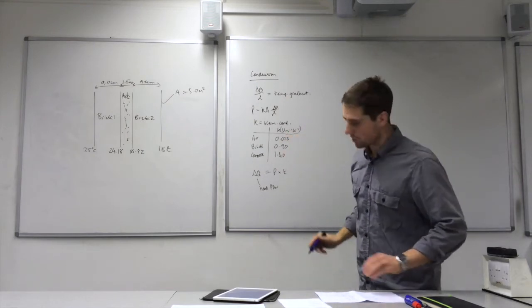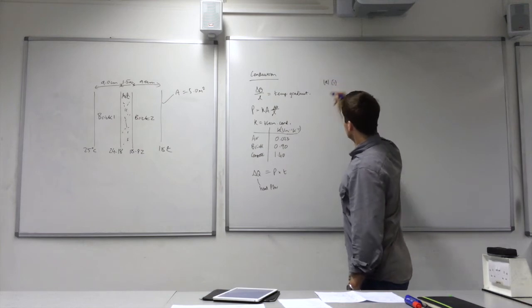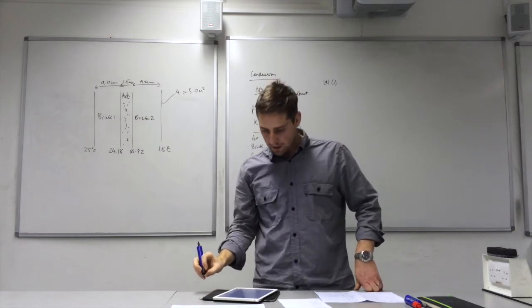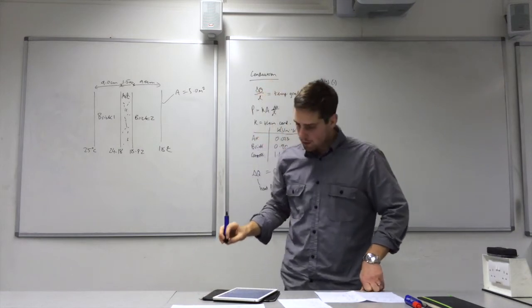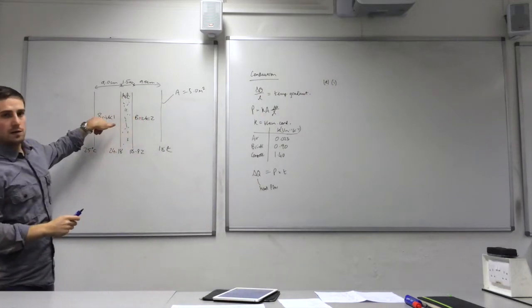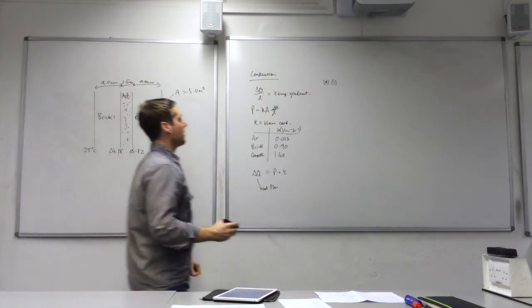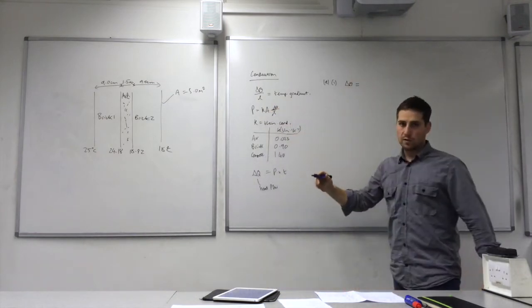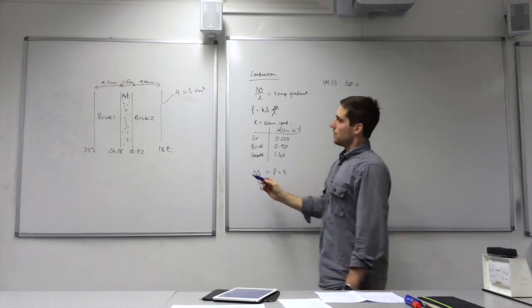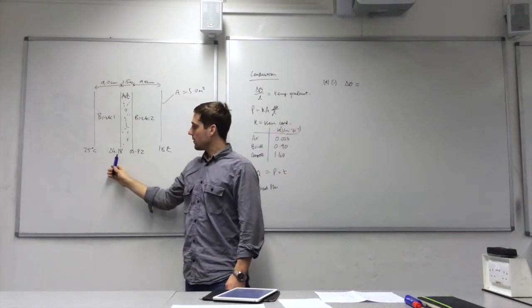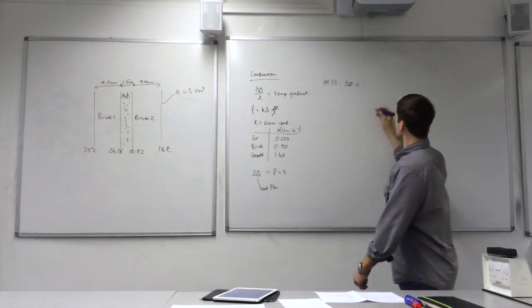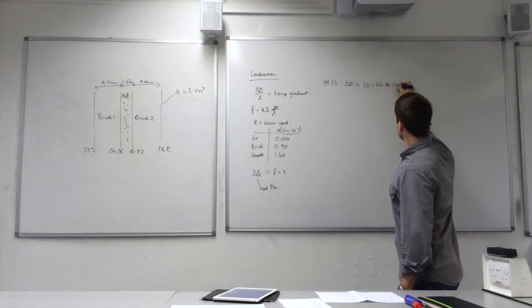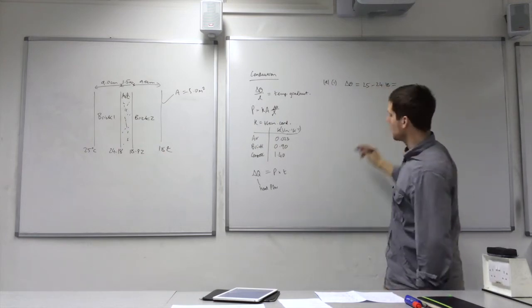So let's start off with question A, part 1. A part 1 says, calculate the temperature difference between the layer of brick 1 of the wall. So delta theta. We just want the temperature difference, which is delta theta. So we do the largest temperature minus the smallest temperature. So that's 25 minus 24.18. And that is equal to 0.82.